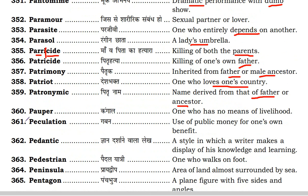Next is pauper — one who has no means of livelihood. Next is peculation. Peculation is the misuse of public money.